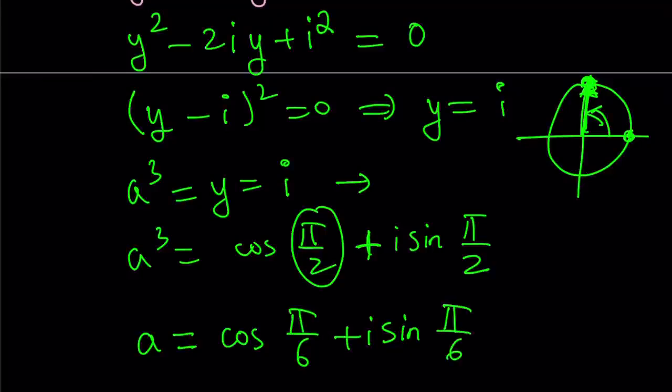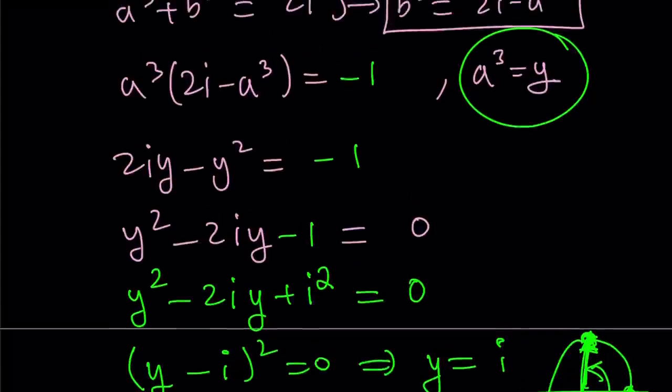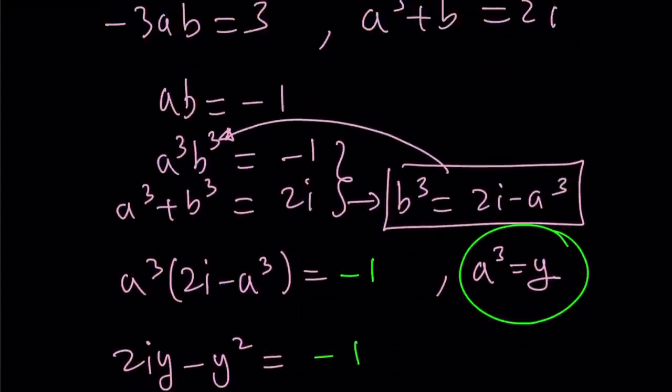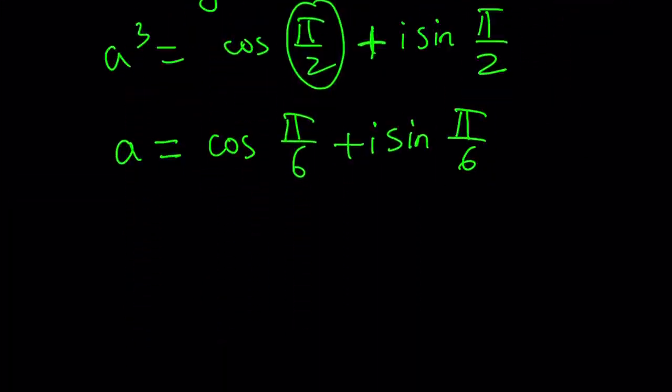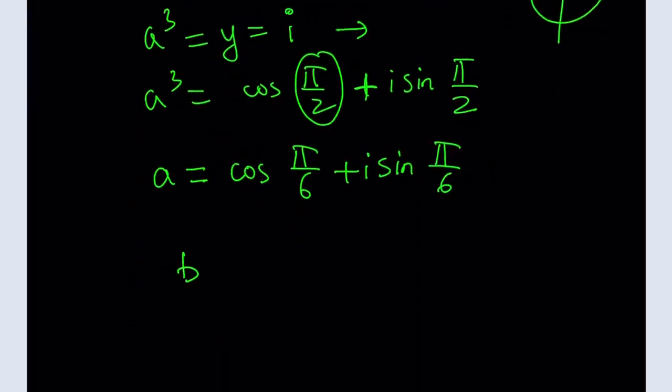That's going to be cosine(π/6) + i·sin(π/6). Again, I'm not looking for y, I'm not looking for a, I'm looking for x. But what is x? x is a plus b. But what is b?